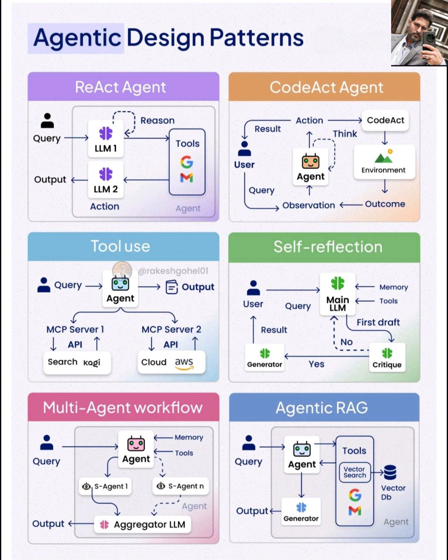Next, we have multi-agent workflow. This pattern involves coordinating multiple specialized AI agents to achieve a complex goal. Each sub-agent might have a specific role or expertise. They communicate with each other, share information, and their individual outputs are often aggregated by another agent, like an aggregator LLM, to produce the final result. This allows for tackling more intricate tasks by breaking them down into smaller, manageable parts handled by experts.